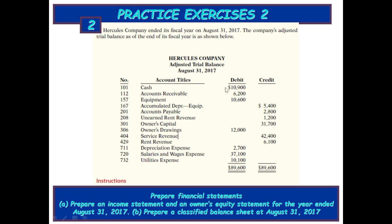Now this is the adjusted trial balance. We have 13 account titles in total. Using this adjusted trial balance, we will prepare our financial statements.